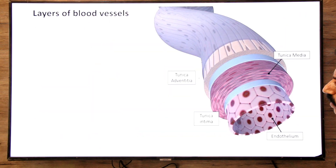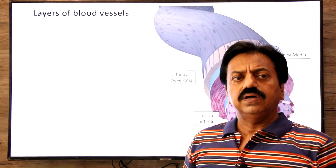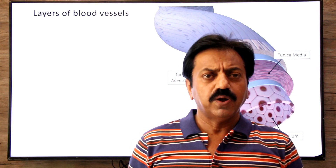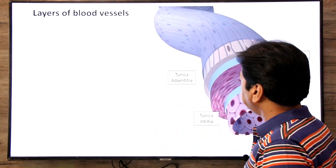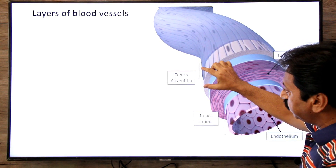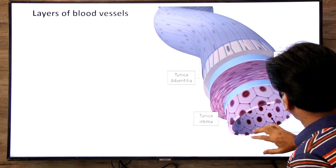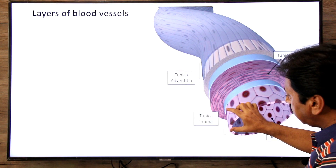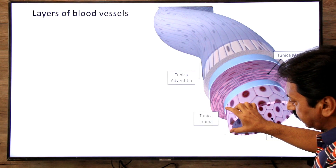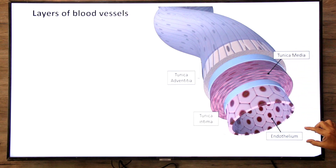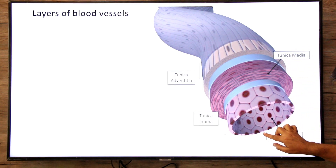Now let's discuss the layers of blood vessels. Both arteries and veins have three layers. The outermost layer is made of collagen fibers — called tunica adventitia, also known as tunica externa. The middle layer is made of smooth muscles — tunica media. The innermost layer is made of endothelial cells — called tunica interna or tunica intima. Capillaries, however, consist only of the endothelium layer.